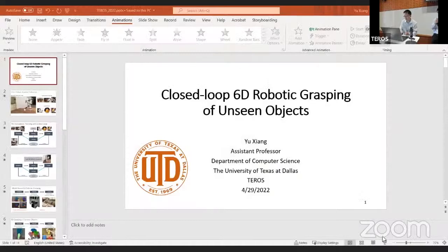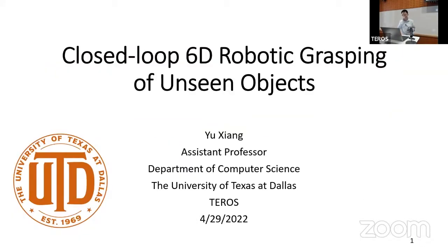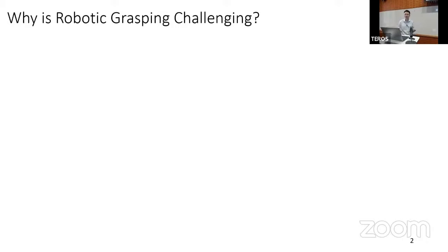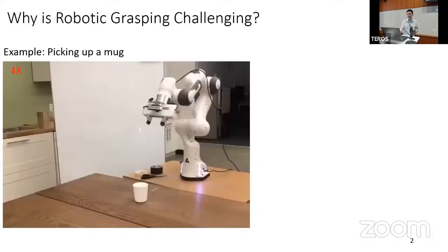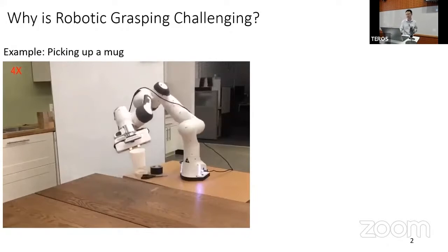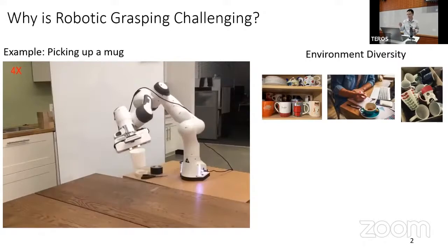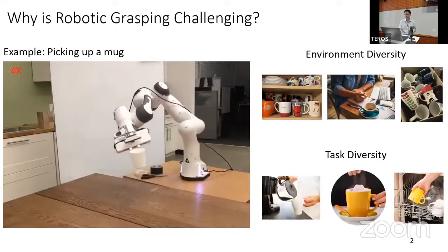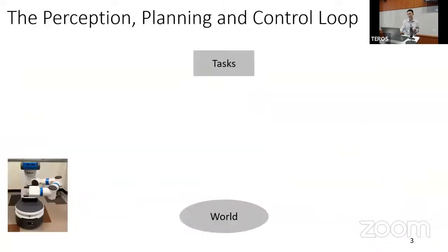Hello everyone, my name is Yuxiang. I'm an assistant professor from UT Dallas, and today I'm going to talk about closed-loop 6DoF robotic grasping for advanced objects. Why is 6DoF grasping challenging? Consider a robot picking up a mug — that seems straightforward, but the problem becomes much harder if we consider many different mugs in different environments: on a shelf, in clutter, in a bin. We also need to consider task diversity — the robot may need to grasp differently depending on whether it's making tea, coffee, or cleaning. The combination of environment diversity and task diversity makes this really challenging.